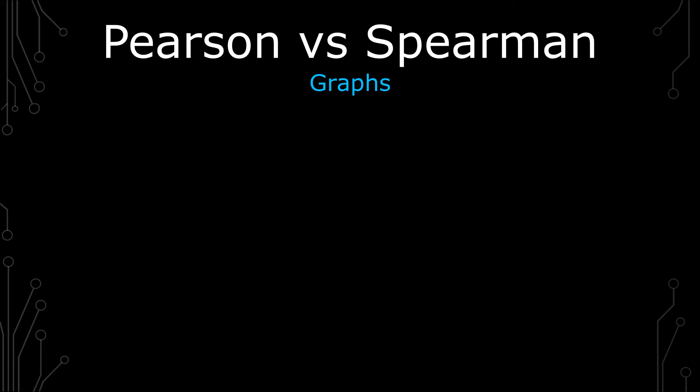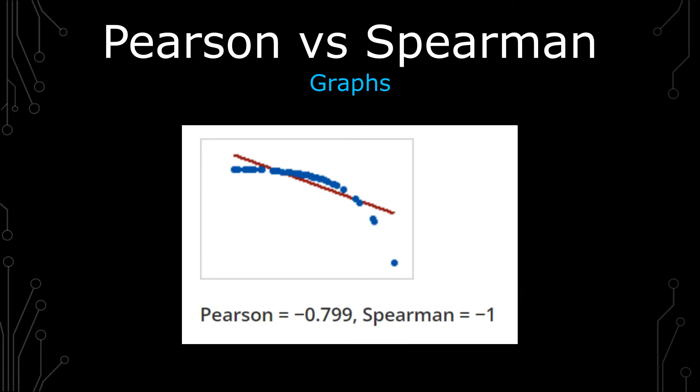The fifth graph here shows a very strong negative relationship for both Pearson and Spearman. But like before, because the intervals are not the same in terms of how much they decrease, you get this variability in the Pearson. So instead of being a negative one, you have negative 0.799.